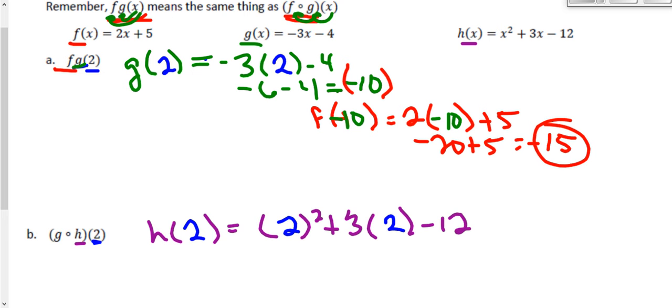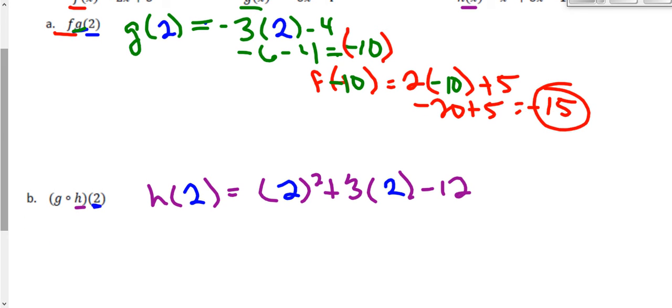And we'll go ahead and simplify this using the order of operations. 2 squared is 4, 3 times 2 is 6, minus 12. That ends up as 10 minus 12, which is negative 2. That tells me h of 2.